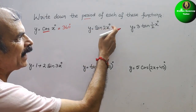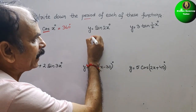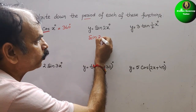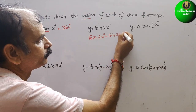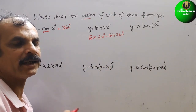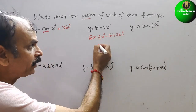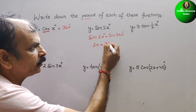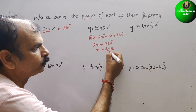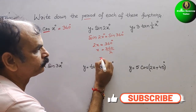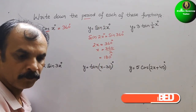Next, y = sin 2x degrees. Sin also completes one full rotation in 360 degrees, so we write sin 2x = sin 360 degrees. Comparing both sides, 2x = 360 degrees, therefore x = 360 divided by 2, which equals 180 degrees. So the period is 180 degrees.